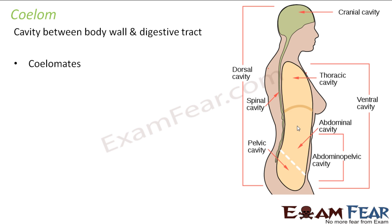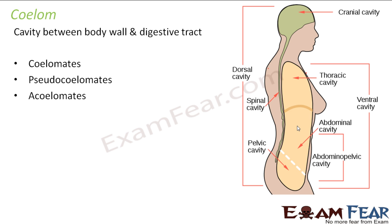Depending upon the presence or absence of coelom, we can classify animals into different types. Coelom is not mandatory for an organism to be alive — it can be present or absent. So we divide animals into coelomates, pseudocoelomates, and acoelomates. Coelomates have a true coelom. Pseudocoelomates have a false coelom — not a true coelom, but a coelom-like structure. Acoelomates have no coelom at all.